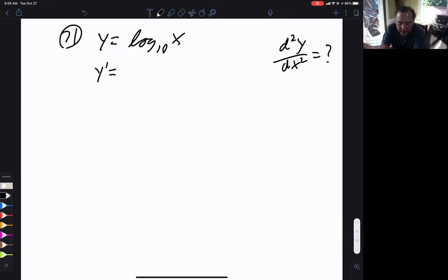So if it's ln, it's 1 over x. So it's still going to be 1 over x. But since our base is no longer e, it's base 10, we need ln of that base on the bottom. And so that is the first derivative.